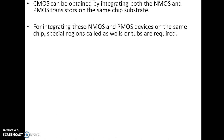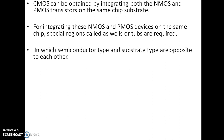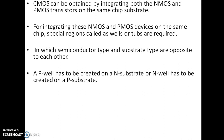CMOS can be obtained by integrating both NMOS and PMOS transistors on the same chip substrate. For integrating these devices on the same chip, special regions called wells or tubs are required — meaning we require an N-well in P-type substrate, or a P-well in N-type substrate, or both N-well and P-well in semiconductor. The type of well and substrate must be opposite to each other: if substrate is P-type then the well must be N-type, and if the substrate is N-type then the well must be P-type.